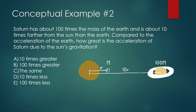They love questions like this, where you're trying to see when one variable changes, how it affects other parts of the equation. Saturn has about 100 times the mass of the Earth and is about 10 times further from the Sun than the Earth. Compared to the acceleration of the Earth, how great is the acceleration of Saturn due to the Sun's gravitation?